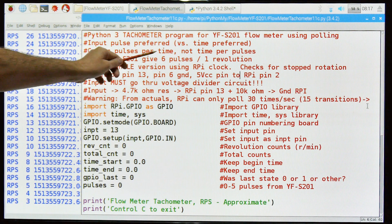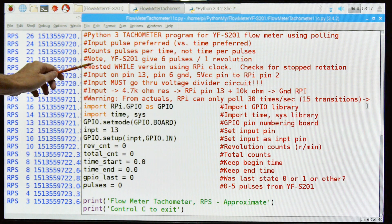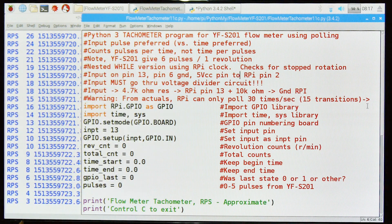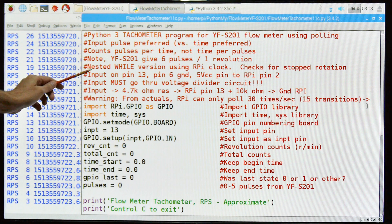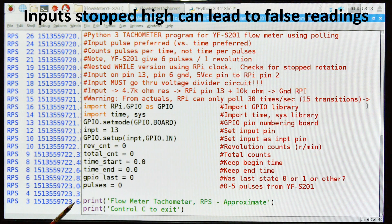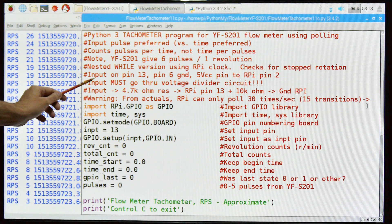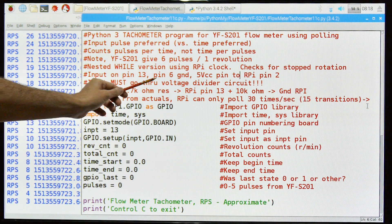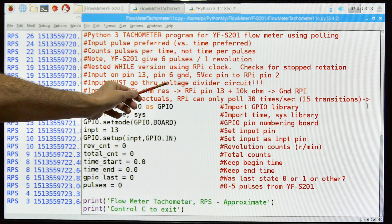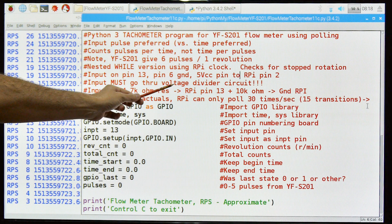This counts pulses per time, not time per pulse. Note that the YF-S201 gives six pulses per revolution, which is one of the things I found out that was rather interesting. It's using a nested while version and uses the RPI clock. It also checks for stopped rotation. That's one of the reasons you don't get a reading when it's not doing anything.